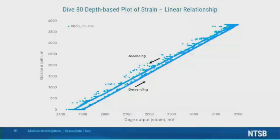Some of the gauges showed a change in strain response after dive 80. OceanGate strain data was typically, and perhaps always, plotted as a function of time. The changes in mechanical response are easier to visualize by plotting the strain against dive depth, as shown here for the hoop strain at gauge group four. Plotting the data in this manner is more akin to a stress-strain plot, which is a standard way of visualizing this type of data.